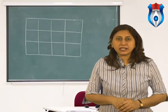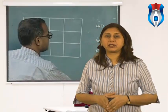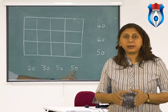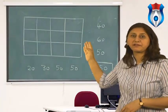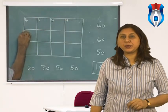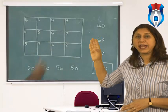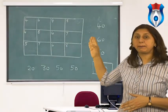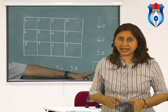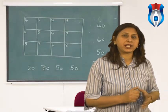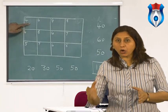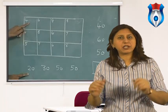Moving towards optimality — the steps are as follows. First, determine the net evaluations using the UV method. Since the net evaluation is zero for all basic cells, it follows that Zij minus Cij equals Ui plus Vj minus Cij for all basic cells ij. We can make use of the relation Ui plus Vj equals Cij for all basic cells ij to obtain the values of Ui's and Vj's. After getting these values, we can compute the net evaluation for each non-basic cell and display them in parentheses in the respective cells.